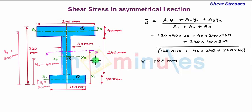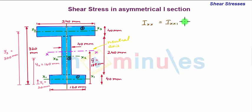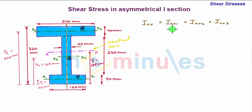We denote the value of y-bar on this section as 188 mm. To determine the shear stress, we need to determine the moment of inertia of the whole eye section about its centroidal axis, which is also the neutral axis. The moment of inertia Ixx of the complete eye section equals Ixx of part 1 plus Ixx of part 2 plus Ixx of part 3. Since the centroidal axes of the individual parts do not coincide with that of the complete section, we apply the parallel axis theorem.